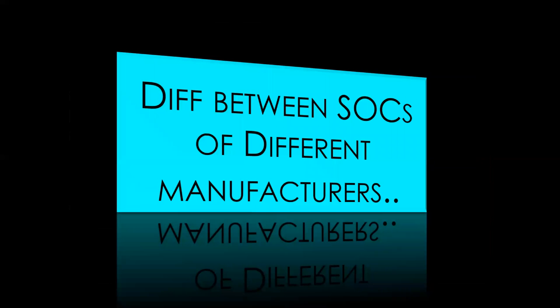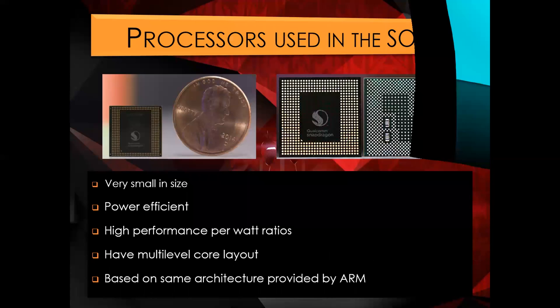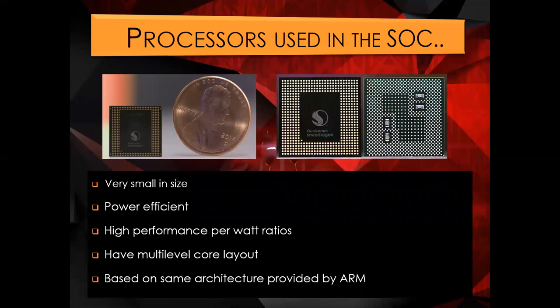Now let's look at the difference between SoCs of different manufacturers, and the processors used in SoC. The processor is very small in size, very power efficient, has a high performance-per-watt ratio, has a multi-level core layout, and is based on the simple architecture provided by ARM.